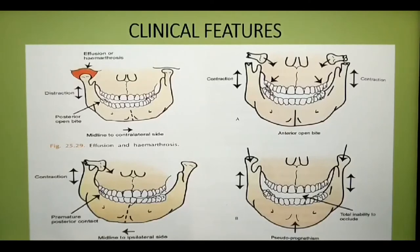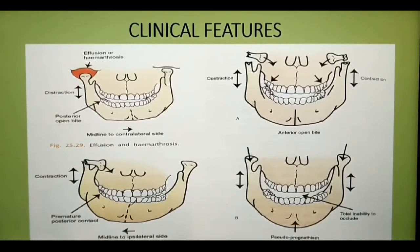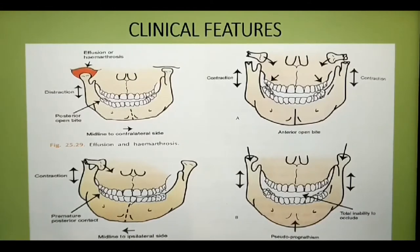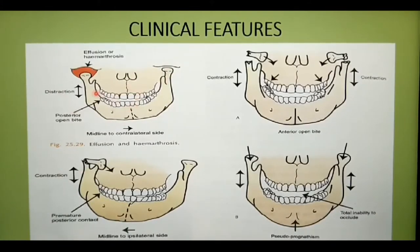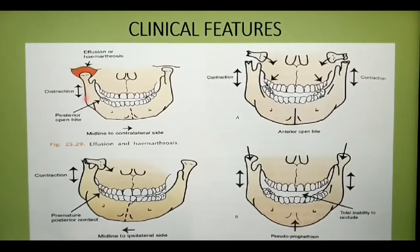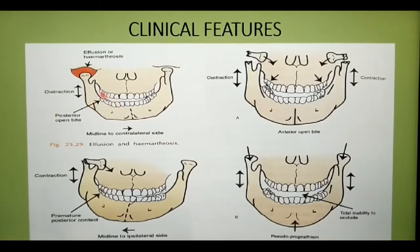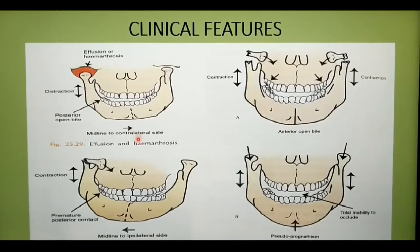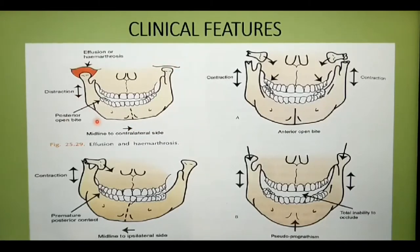Here is a diagrammatic representation of the characteristic disturbances of occlusion after condylar injury. In the first diagram, this is post-traumatic effusion or haemarthrosis — meaning collection of blood within the joint space. This haemarthrosis may distract the joint surfaces, causing a posterior open bite on the affected side with deviation of the mandibular midline towards the opposite side. This is characteristic of a contusional injury where there is bleeding within the joint space without any definite fracture.